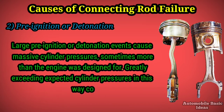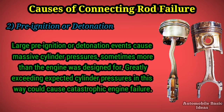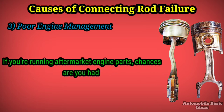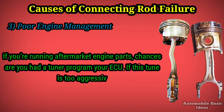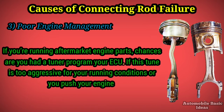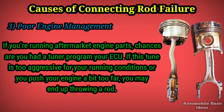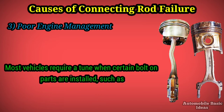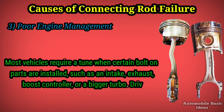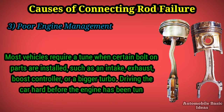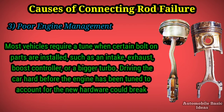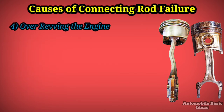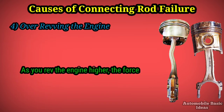Three: poor engine management. Greatly exceeding expected cylinder pressures can cause catastrophic engine failure. If you're running aftermarket engine parts, chances are you had a tuner program your ECU. If this tune is too aggressive for your running conditions, or you push your engine too far, you may end up throwing a rod. Most vehicles require a tune when certain bolt-on parts are installed, such as an intake, exhaust, boost controller, or bigger turbo. Driving the car hard before the engine has been tuned to account for the new hardware could break something expensive, including a connecting rod.